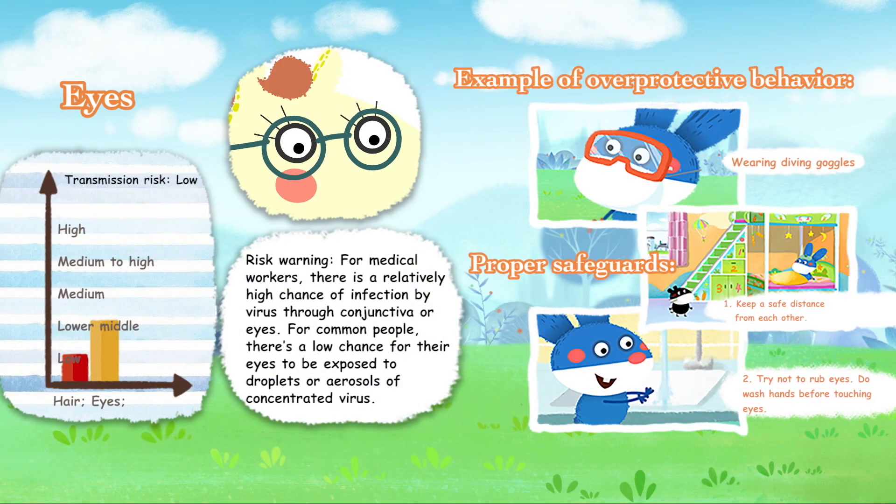Eyes — Risk Warning: For medical workers, there is a relatively high chance of infection through the conjunctiva or eyes. For common people, the chance of eyes being exposed to droplets or aerosols of concentrated virus is low. Example of overprotective behavior: wearing diving goggles. Proper safeguards: (1) keep a safe distance from others, (2) try not to rub your eyes, and (3) wash hands before touching eyes.